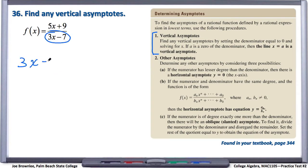So if we have 3x minus 7, we set that equal to 0 and solve. First things first, we'll add 7 to both sides. That'll leave us with 3x equals 7.